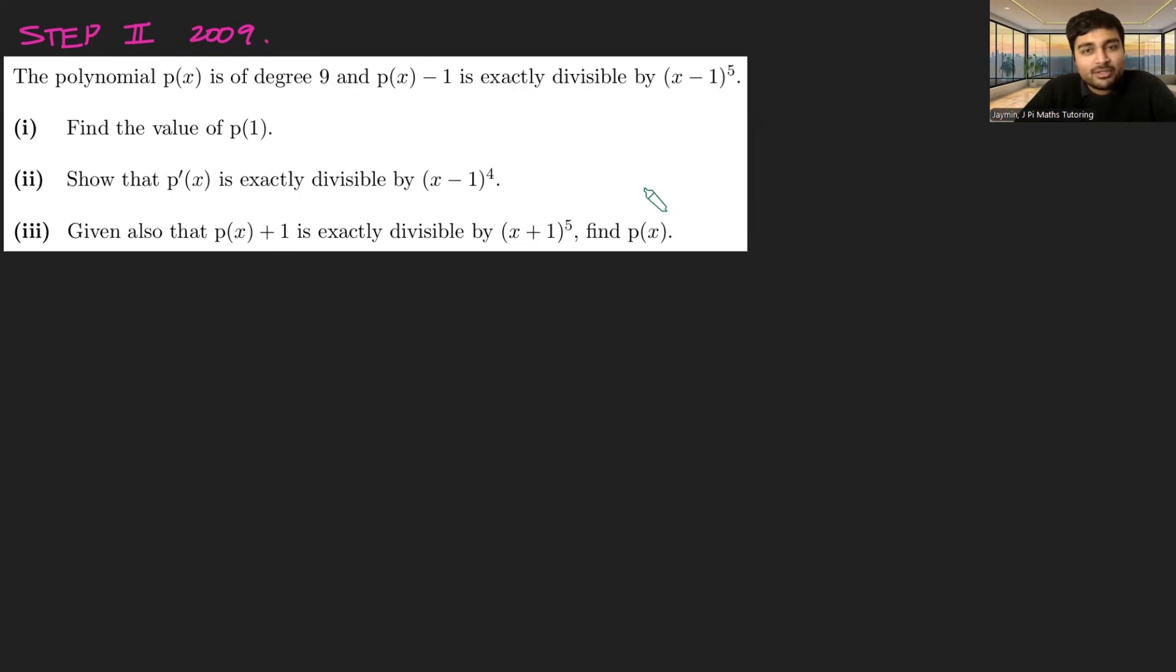We've got a polynomial p(x) of degree 9 and p(x-1) is exactly divisible by (x-1)^5. Part 1, find the value of p(1). Part 2, show that p'(x) is exactly divisible by (x-1)^4. And the final part, we're given that p(x+1) is exactly divisible by (x+1)^5, and from that we want to find p(x).